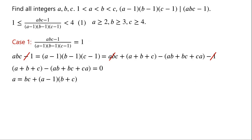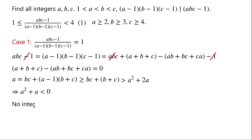As a ≥ 2, so a must be greater than or equal to bc + b + c. As both b and c are greater than a, so this must be greater than a² + 2a. This implies a² + a < 0, which is impossible. So there are no solutions for Case 1.